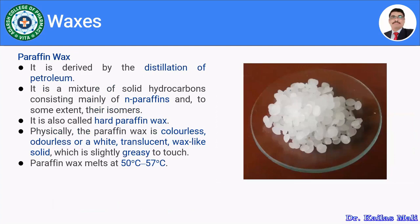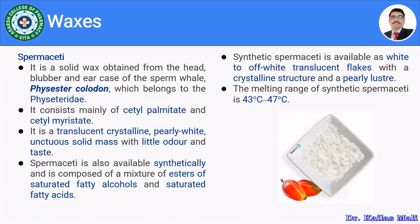The next wax is known as paraffin wax. Paraffin wax is obtained by the distillation of petroleum. It is a mixture of solid hydrocarbons consisting mainly of n-paraffins and, to some extent, their isomers. It is also called hard paraffin wax. Physically, paraffin wax is a colourless, odourless or white translucent wax-like solid, slightly greasy to touch, with a melting point ranging between 50 to 57 degrees Celsius.